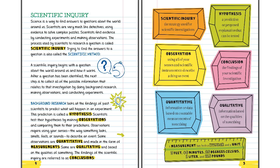Background research looks at the findings of past scientists to predict what will happen in an experiment. This prediction is called a hypothesis. Scientists test their hypotheses by making observations and comparing them to their predictions. Observations require using your senses, the way something looks, smells, feels, or sounds, to describe an event. Some observations are quantitative and made in the form of measurements. Some are qualitative and based on the qualities of something. The findings of the scientific inquiry are referred to as conclusions.